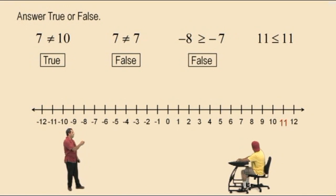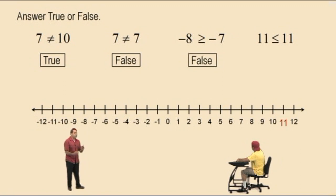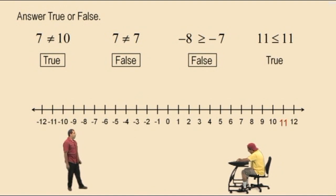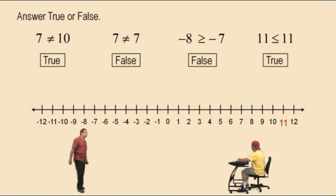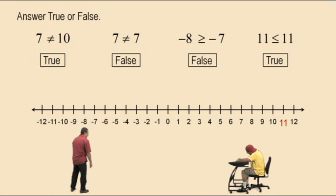Now this one: 11 is less than or equal to 11. As long as we meet any one of the two conditions, our answer will be true. True or false, Charlie? True. Why is it true? Because 11 equals 11. That's right — because 11 does equal 11. Very nice there, Charlie.